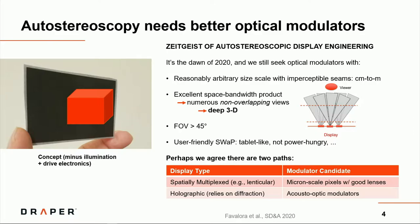If you want deep 3D, not just 3D, but 3D with some appreciable depth, you need numerous non-overlapping views, which is very hard, and draws upon something called space bandwidth product of the underlying modulator. The field of view has to be big enough to be useful. And, of course, you want user-friendly SWAP, or size, weight, and power, something tablet-like and not power-hungry.